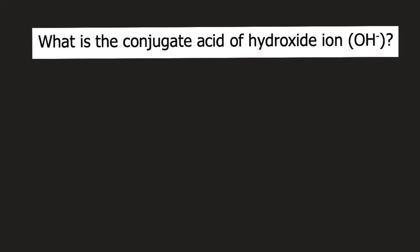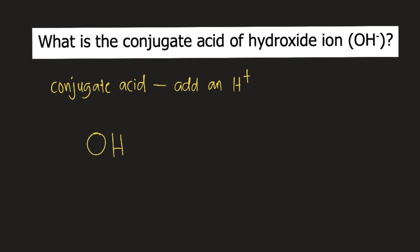What is the conjugate acid of hydroxide ion, or OH⁻? If you want to determine the conjugate acid, what you need to do is add an H⁺ to the ion or to the molecule. In this problem, the given ion is OH⁻, or the hydroxide anion.